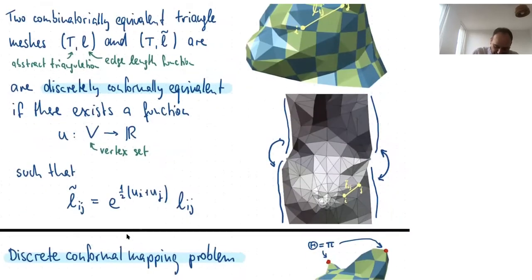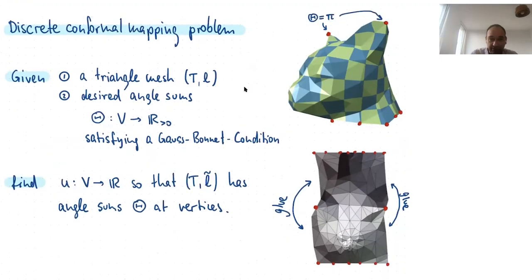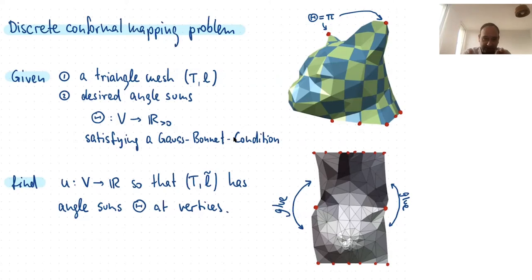Based on this notion, which is due to Feng Luo, you can consider the following discrete conformal mapping problem. Given your initial triangle mesh and desired angle sums for each vertex — satisfying the Gauss-Bonnet equation, namely that the sum of all angles at all vertices equals pi times the number of triangles — find the logarithmic scale factors U such that the triangulation with the new edge lengths has angle sums as required at the vertices.